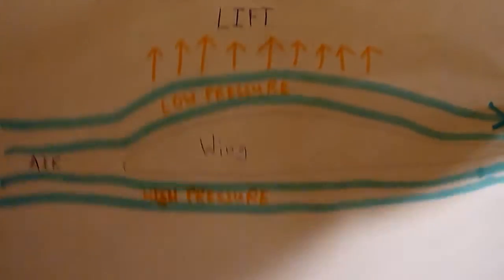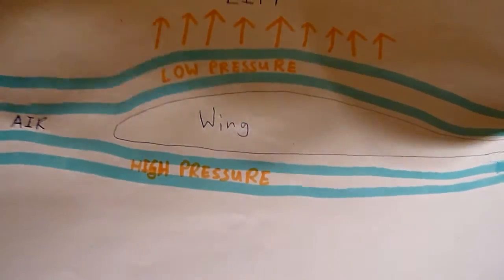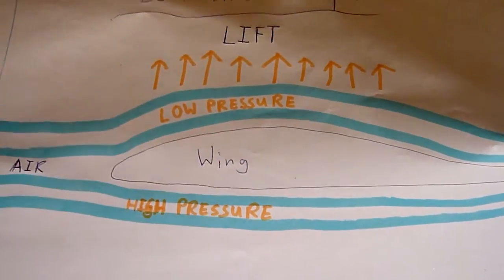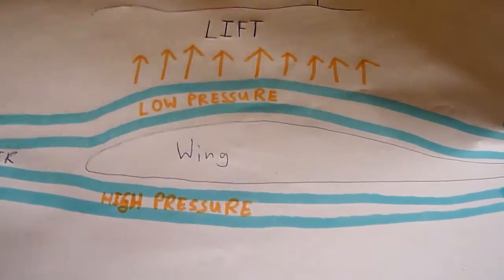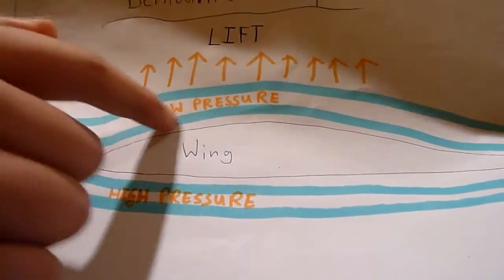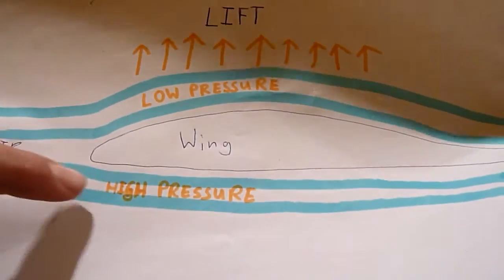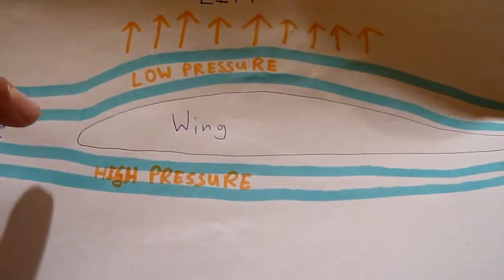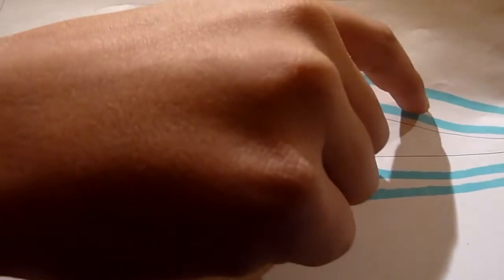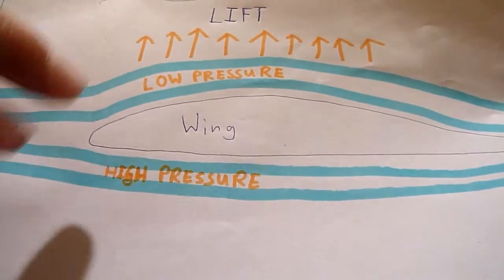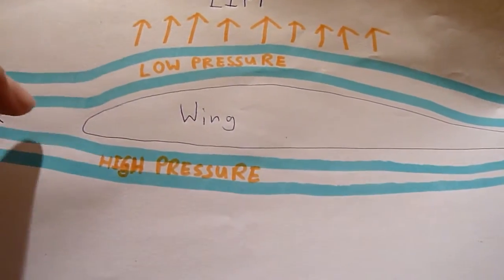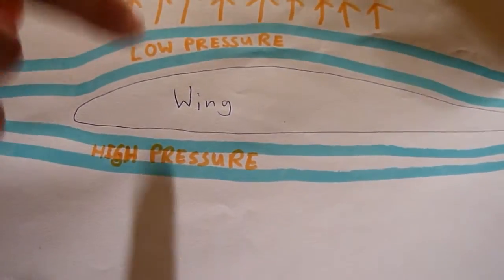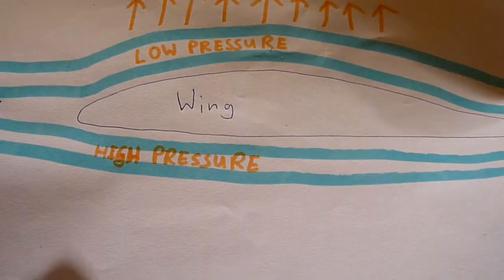As you can see here, the air comes from here — this is the wing flying forward. The air travels a longer way over the top of the wing than it does underneath, because there's a curve on top. So the air has to be faster on the upper side of the wing than on the underside, and this creates a low pressure zone which creates lift. This is Bernoulli's principle.